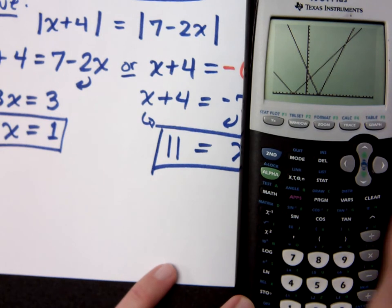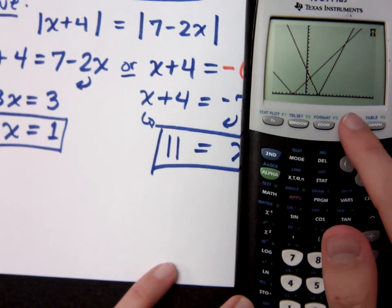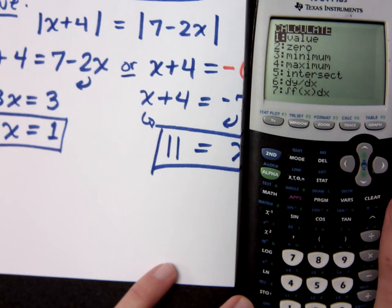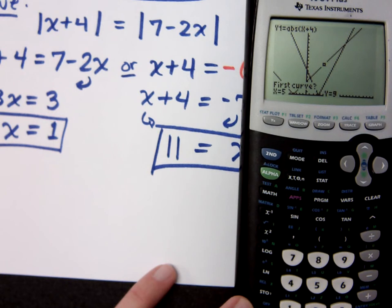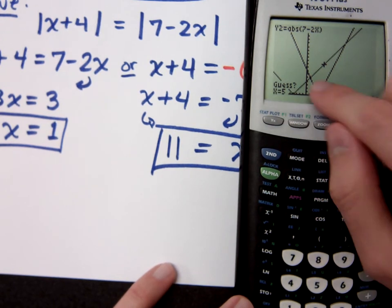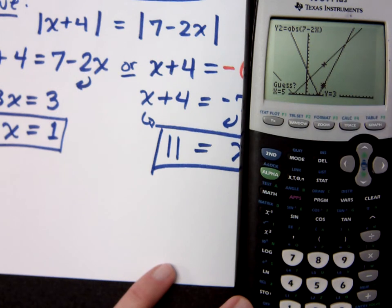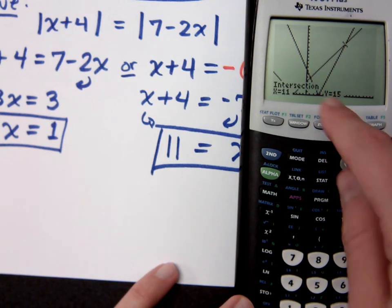Well, check this out. If I want to do the intersection here just by looking at the graph, second trace to get you to calculate menu, option 5 to intersect. First curve is good. Second curve is great. Now, if I don't do anything else for my guess, and I just let it go, right now it says x is 5, which of the solutions will it go to first? x equals 1 or x equals 11? It's going to go to 1. Isn't 5 closer to 1?